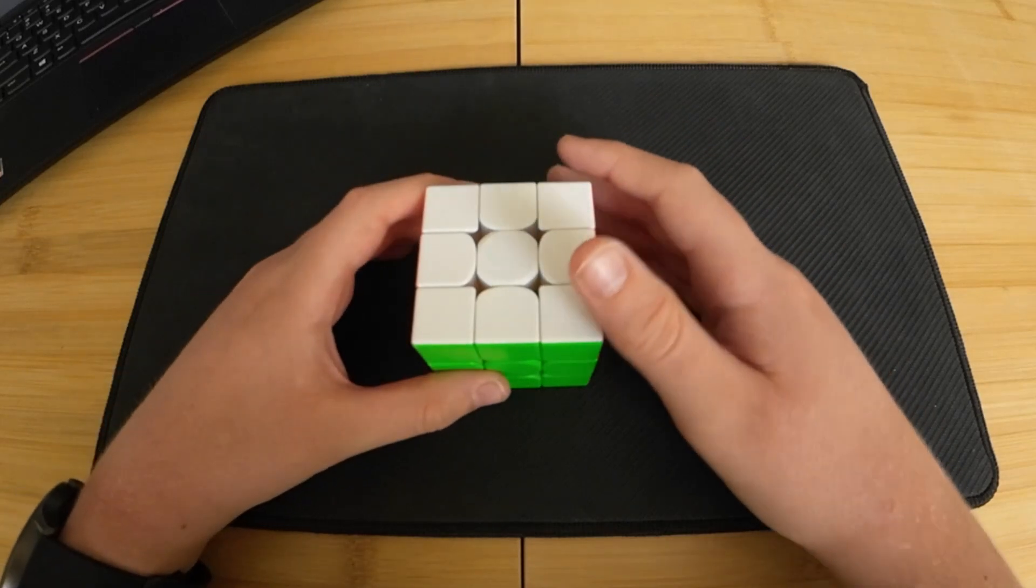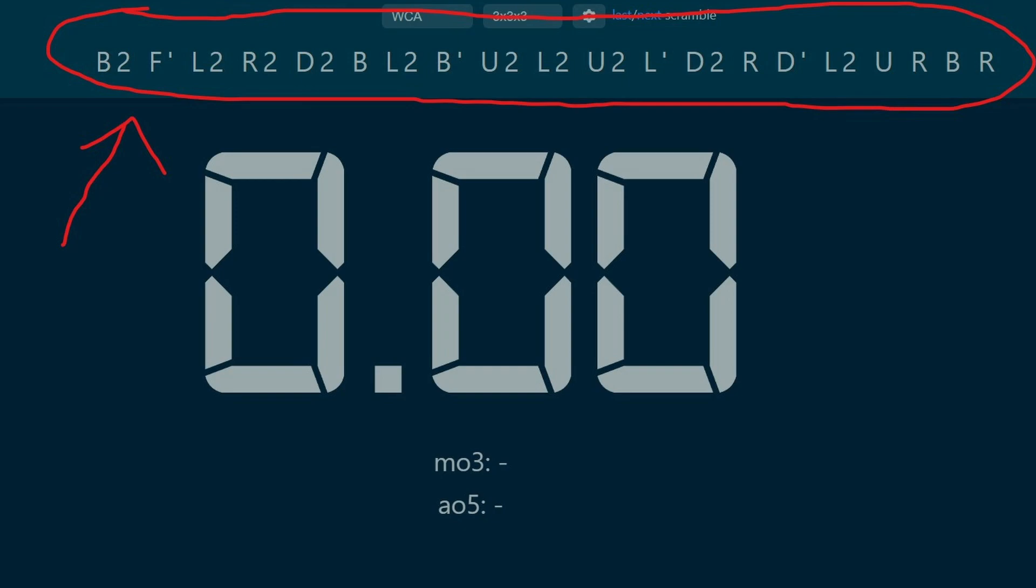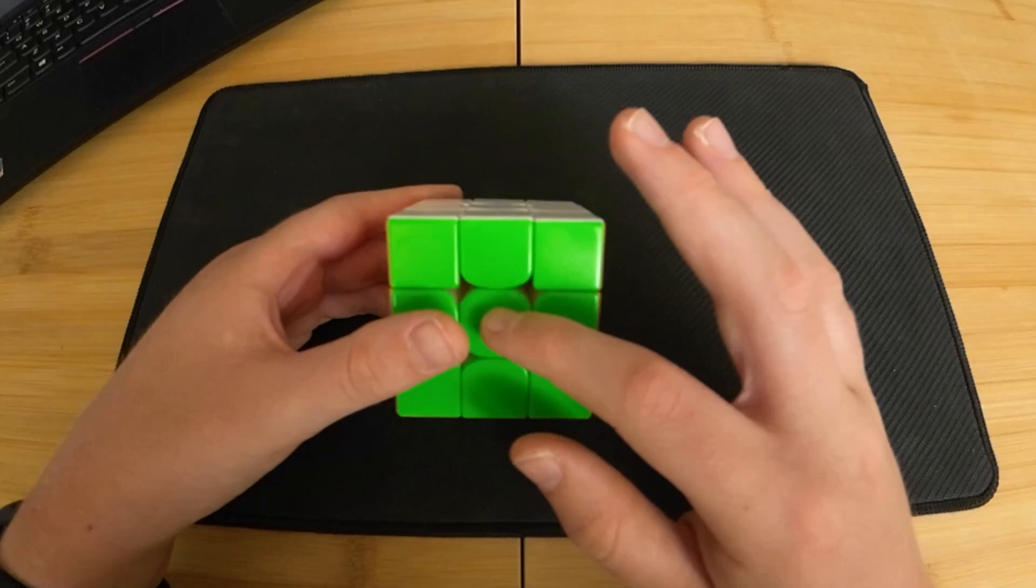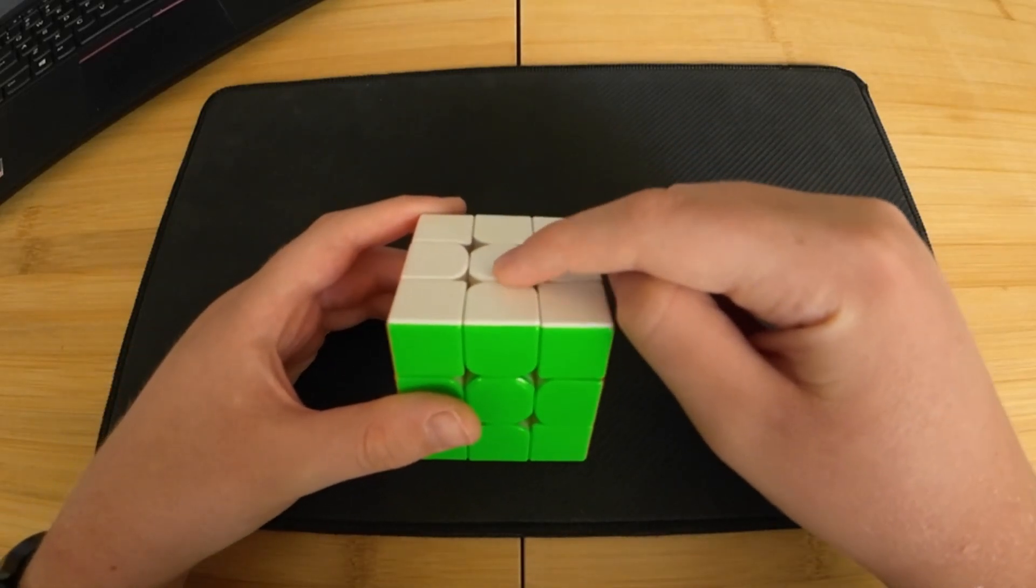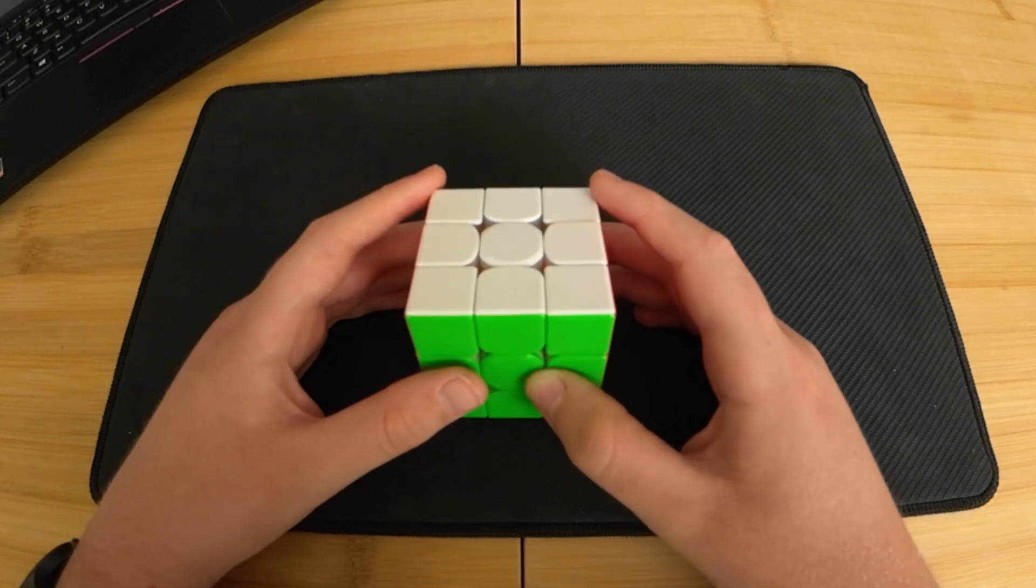In online cubing software like CSTimer, you will most of the time see a long string of this notation at the top. It is important with these scrambles that you start with the green center on the front and the white center on the top. Now let's do a practice one of these scrambles, combining everything we've learnt so far.